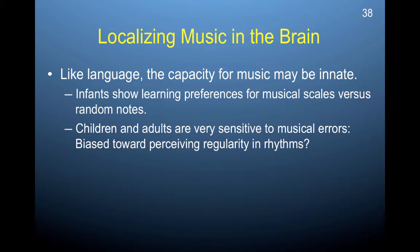Like language, the capacity for music may be innate. Infants show learning preferences for musical scales versus random notes, and children and adults are very sensitive to musical errors. We are biased toward perceiving regularity in rhythms, and when something is taken out of rhythm it can feel very jarring — a sort of negative jumble that can actually hurt your ears. That sensation of music that isn't loud but still hurts your ears corresponds with the perception that something isn't as it should be — it's out of rhythm, something is wrong. So we have a strong bias toward perceiving regularity in sound rhythms.